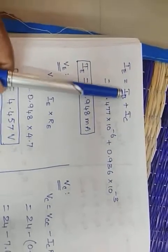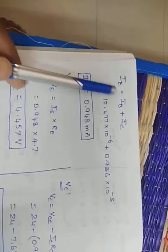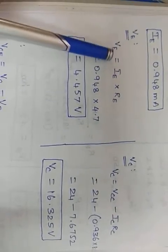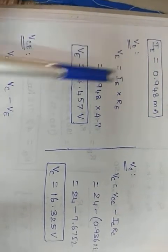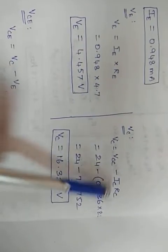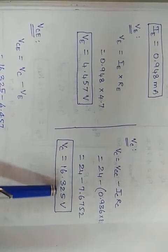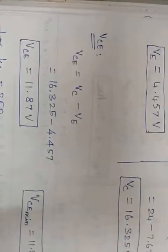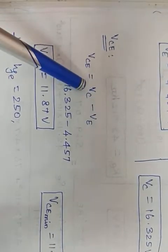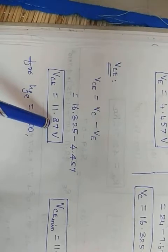IE = IB + IC = 0.948 milliamps. VE = IE × RE. Substituting the values, VE = 4.457V. VC = VCC − IC × RC, giving VC = 16.325V. VCE = VC − VE = 16.325 − 4.457 = 11.87V. This is the minimum VCE value corresponding to HFE = 75.